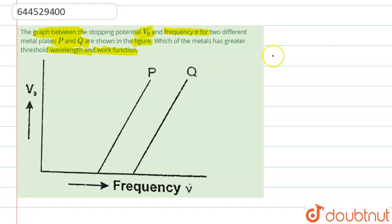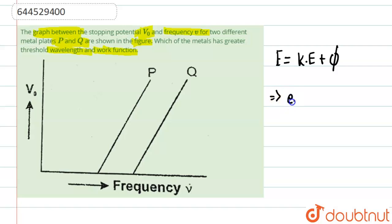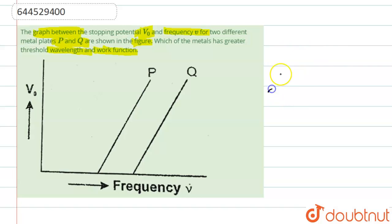These are two different metals. We know that energy is equal to kinetic energy plus work function — actually, kinetic energy is equal to the energy falling upon the surface minus the work function. So kinetic energy equals hν minus φ, where the energy term E·V₀ represents kinetic energy.